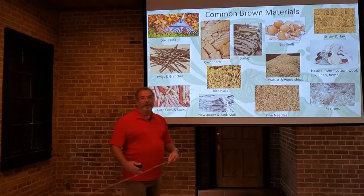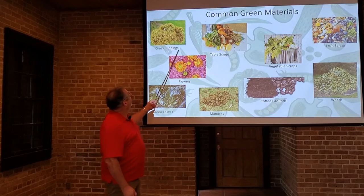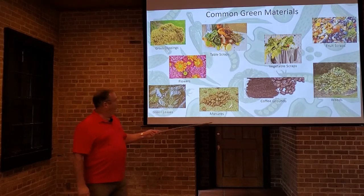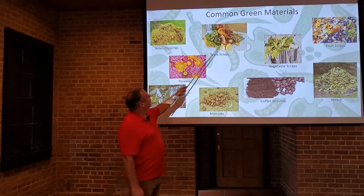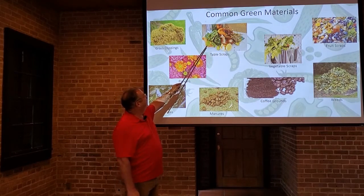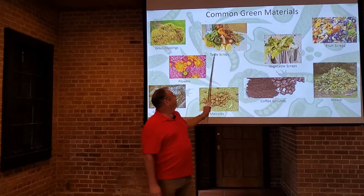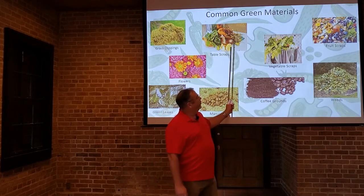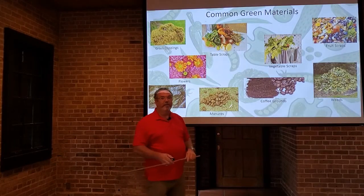When talking about green materials, we've got grass clippings — lots of moisture, pack down very tightly. Flowers, green leaves, and manures. Some might recognize these as horse apples. Table scraps: the ends of vegetables and vegetable scraps you'd otherwise throw away. You don't want to put a lot of meat in — no meats, cheeses, or fats. Anna is going to talk later about what not to put in the compost pile. Fruit scraps are fine. You can use weeds, but be careful — if they have a lot of seeds, make sure the compost gets hot enough to kill those seeds.